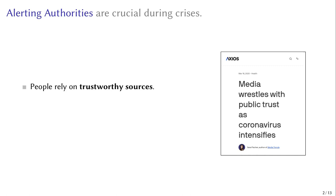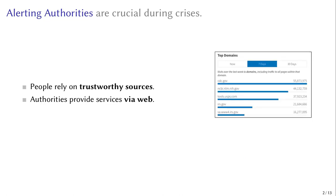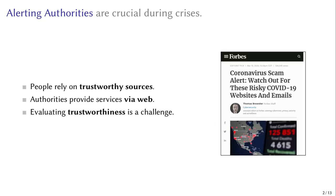Online emergency services are part of the broader critical infrastructure, and research shows that people are reliant on trustworthy sources during emergencies, crises and disasters, which are provided among others through websites and web portals of respective authorities. At the same time, it remains a challenge for users to distinguish between legitimate and malicious online services.